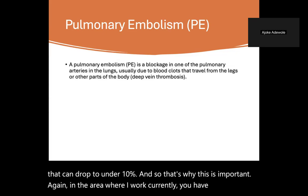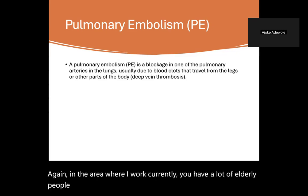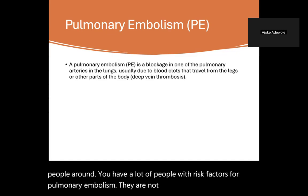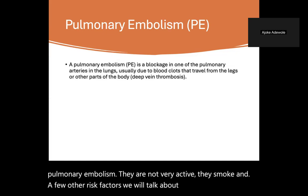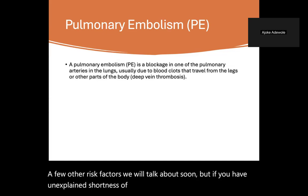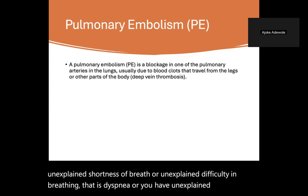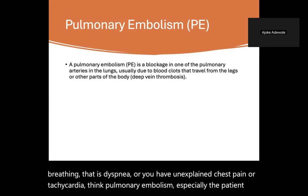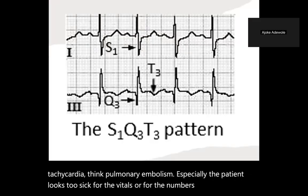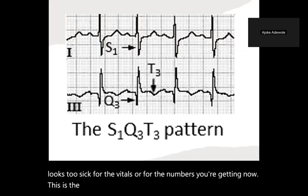In the area where I work, there are a lot of elderly people with risk factors for pulmonary embolism — they're not very active and they smoke. If you have unexplained shortness of breath, unexplained dyspnea, unexplained chest pain, or tachycardia, think pulmonary embolism — especially if the patient looks too sick for the vitals or numbers you're getting. Now, the popular S1Q3T3: to be fair, I think I've seen this more in textbooks than in real life.